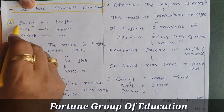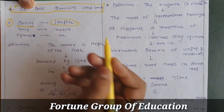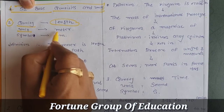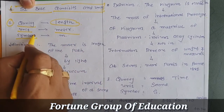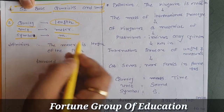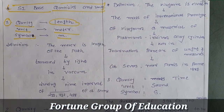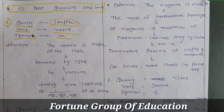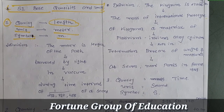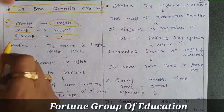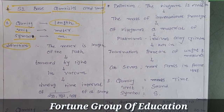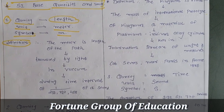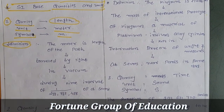The first base quantity is length. The unit of length is meter and the symbol is small 'm'. Note that if we use capital 'M' it represents mass, so the symbol for length is always small 'm'. Now let's look at the definition of length.